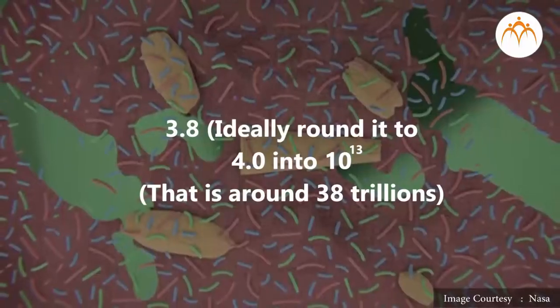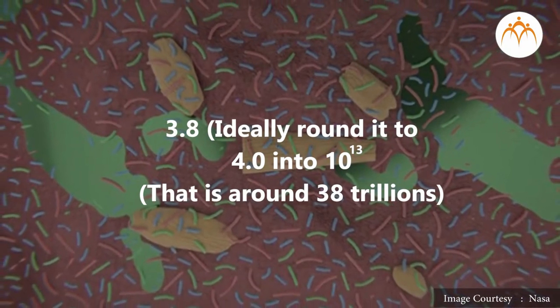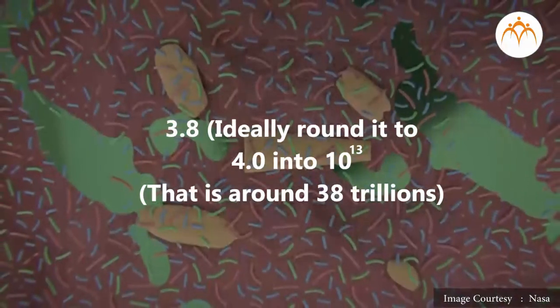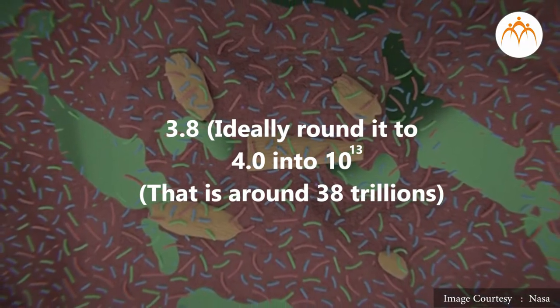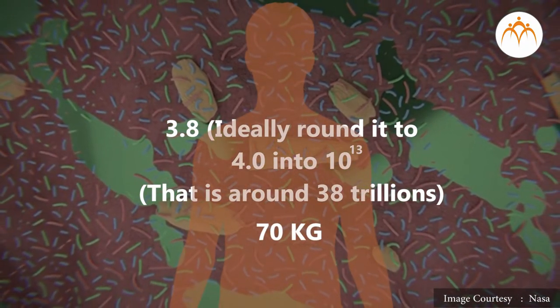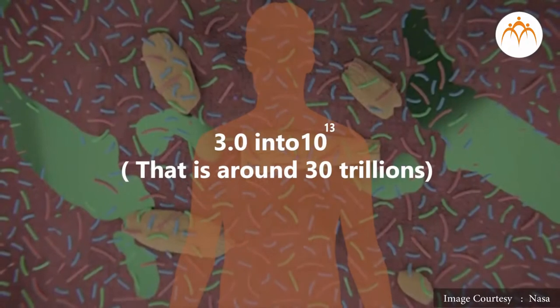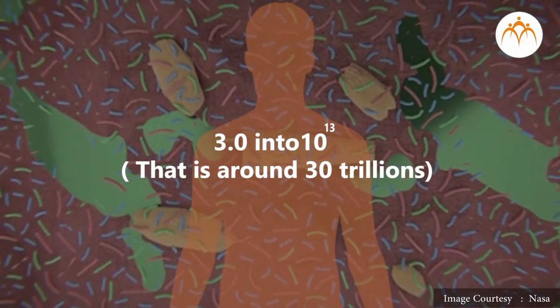This microbiota has a large impact on our health. From recent research in this field, scientists have found that there are about 3.8, ideally rounded to 4.0 into 10 raised to 13, that is around 38 trillion bacteria present in a person with the average weight of 70 kg, where the number of human cells constituting his body are 3.0 into 10 raised to 13, that is around 30 trillion. Thus the number of bacteria in the body is actually of the same order as the number of human cells.